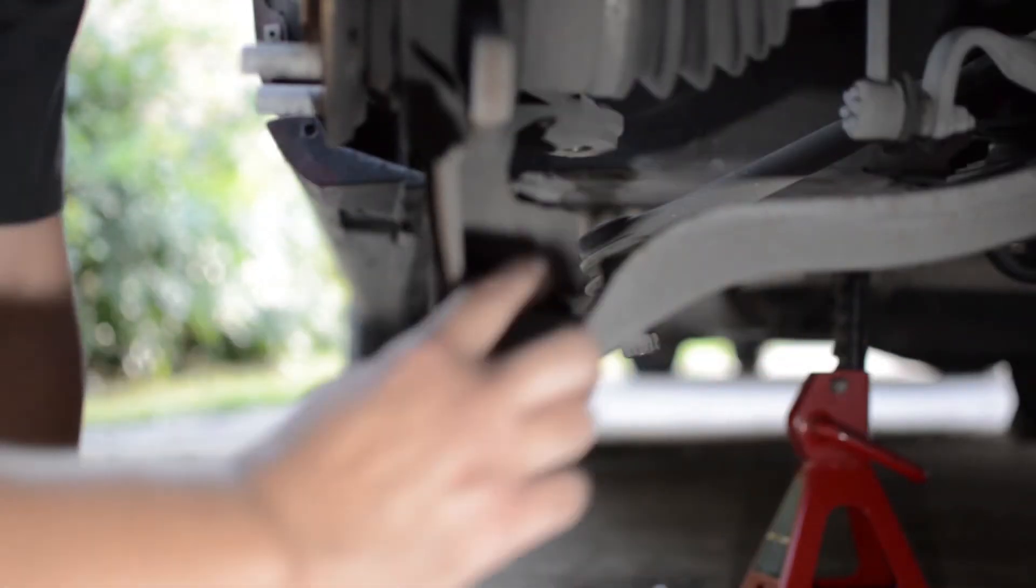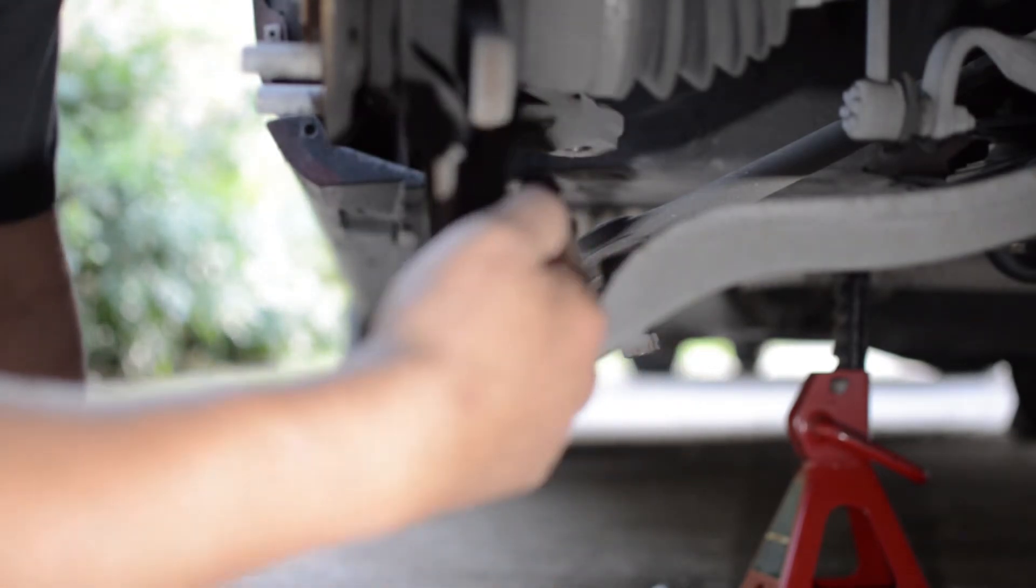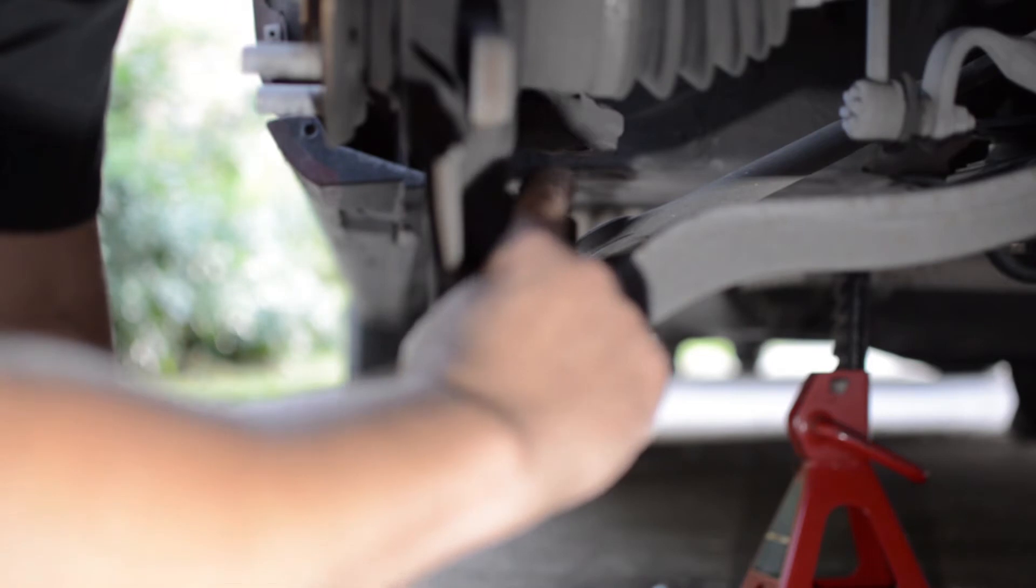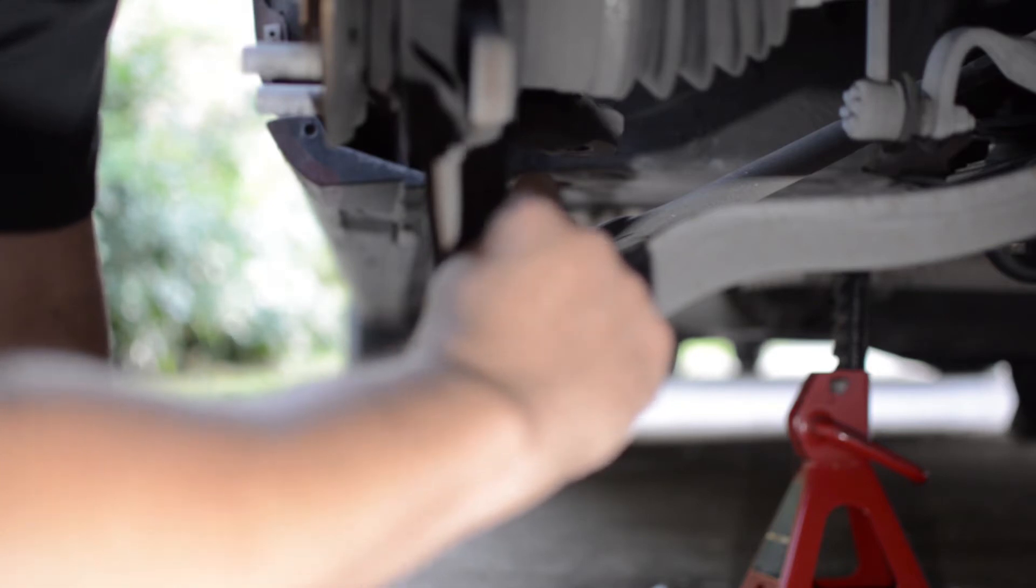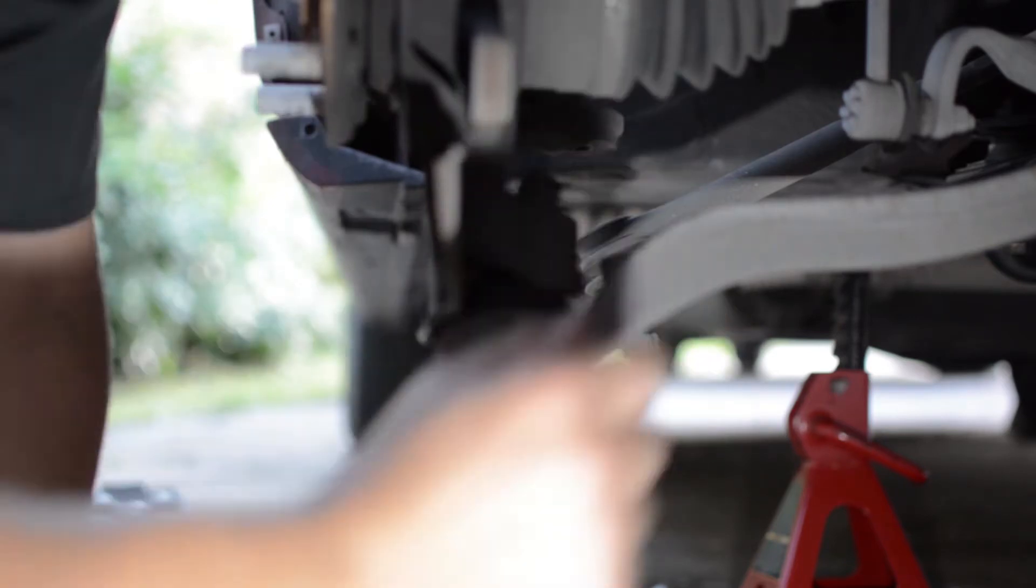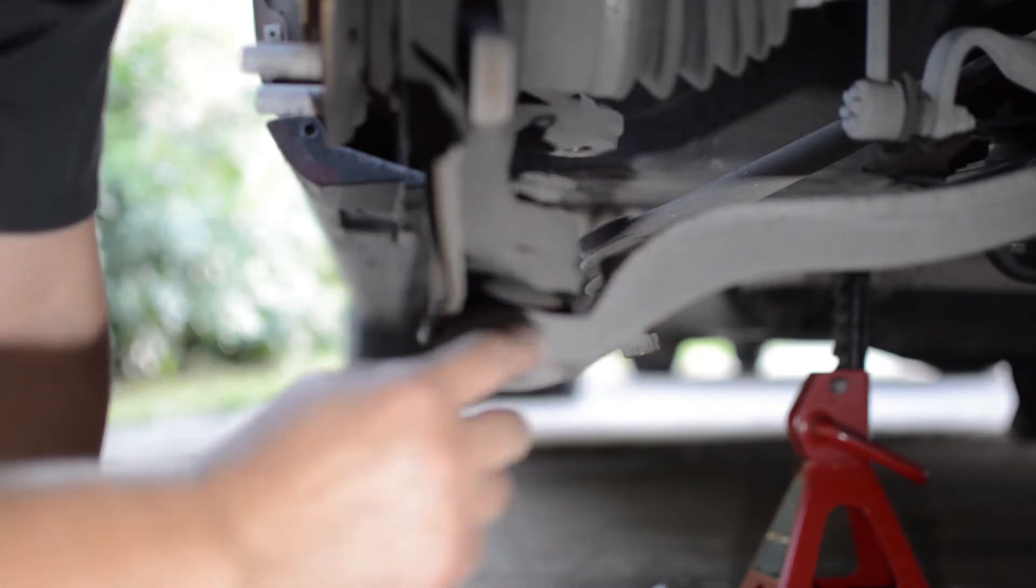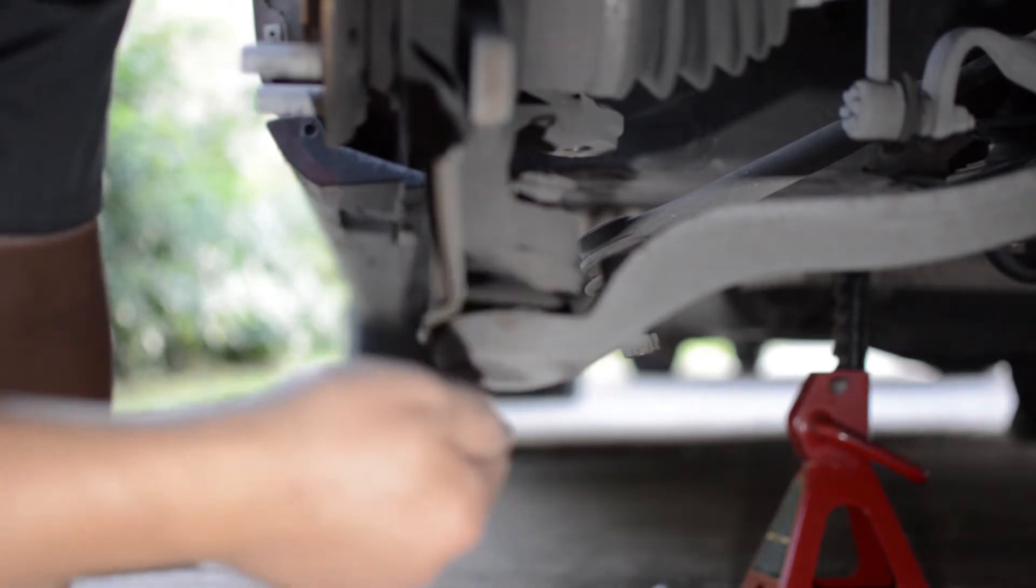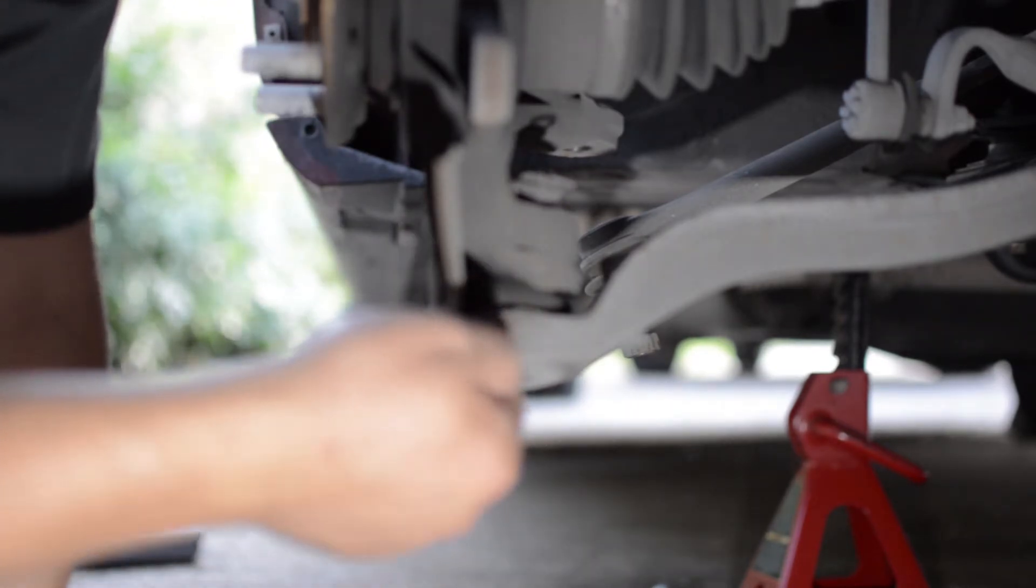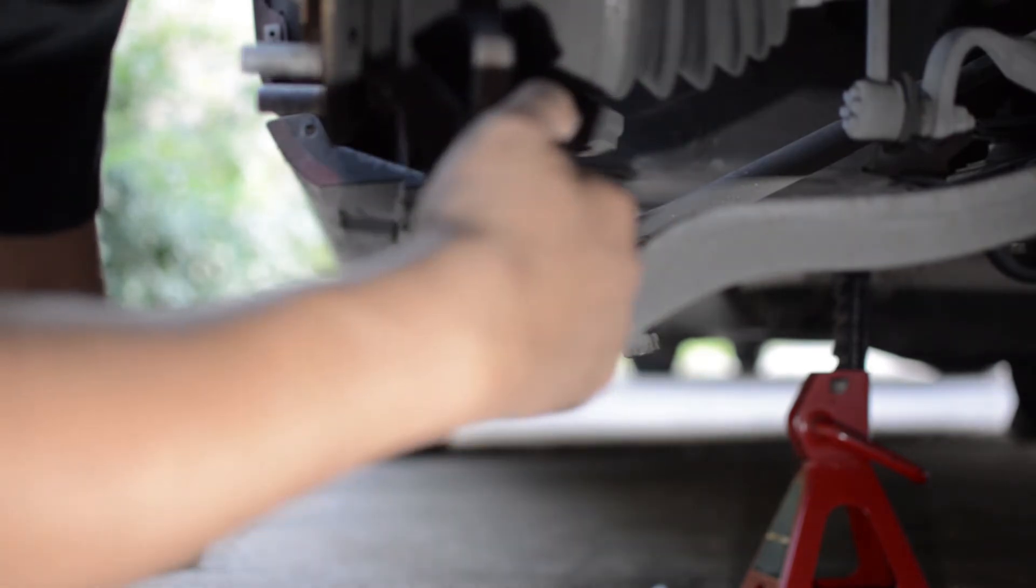Now we have to remove the lower ball joint from the knuckle. Remove the cotter pin, then remove the nut but not all the way. We're doing the same procedure, keeping it flush onto the actual stud of the ball joint so that when we hit the knuckle and break the lower ball joint loose, we don't damage the stud.